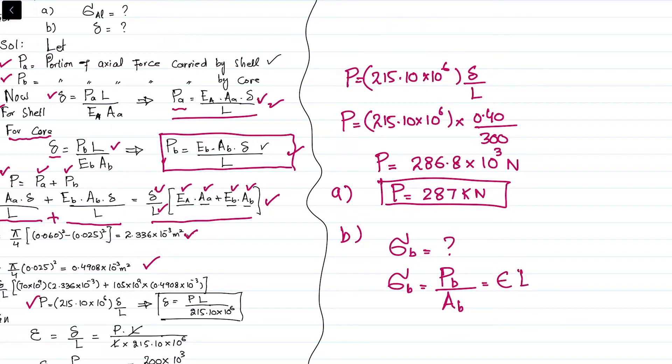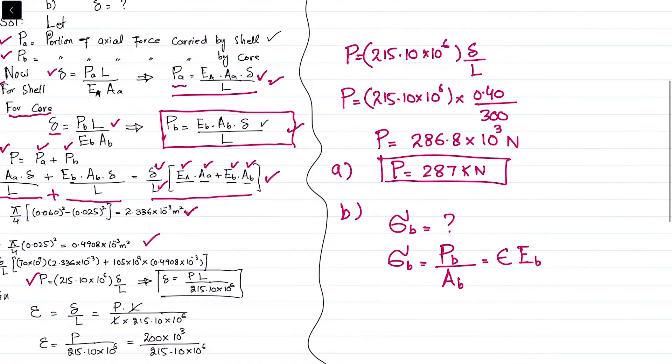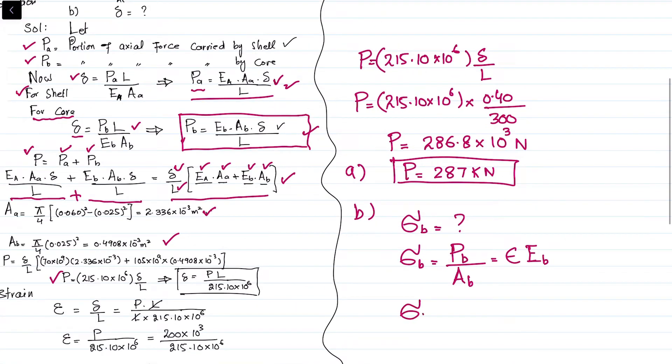Sigma B equals strain times Eb. Strain equals change in length divided by original length times Eb. Change in length is 0.40 times 10^-3 meters, because we're finding stress in pascals (newtons per square meter), so we convert millimeters to meters.